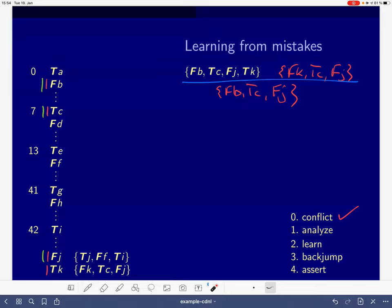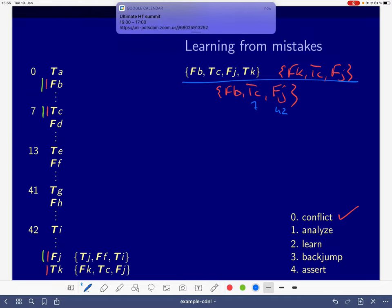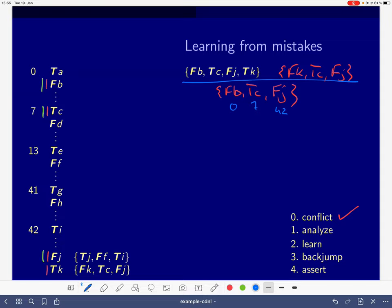But that is not the smartest thing to do. The smartest thing is actually to go to the highest spot in the assignment where this guy is unit resulting. We look at the decision levels. This here is 42, T of C is 7, and F of B is 0. This already tells us where we have to jump back to. This is where the current conflict literal is. We look at the maximum one, and this is actually the 7 here. This is the highest point where this guy gives us a unit resulting literal.